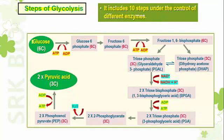Glycolysis is initiated by the glucose molecule. Glucose is a 6-carbon compound. With the help of the enzyme hexokinase, using an ATP molecule, glucose is converted into glucose-6-phosphate. The inorganic phosphate of ATP is added to glucose, and ATP is converted into ADP. This is the first step and energy is utilized here.